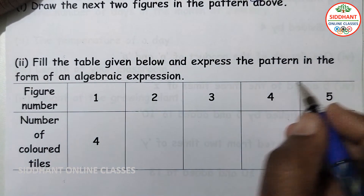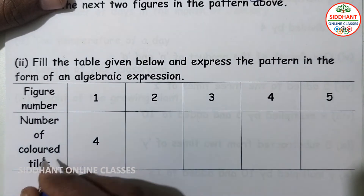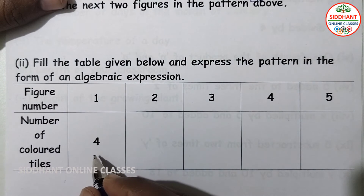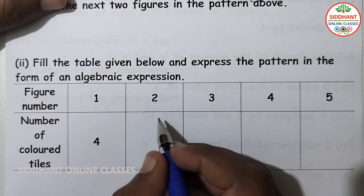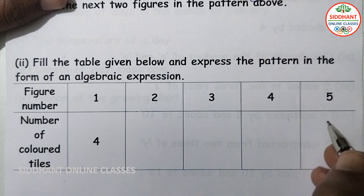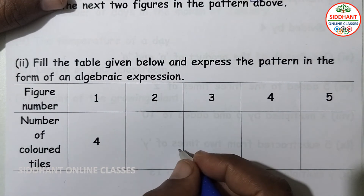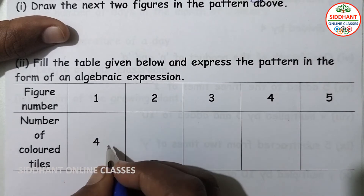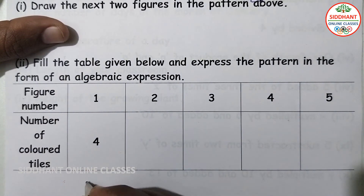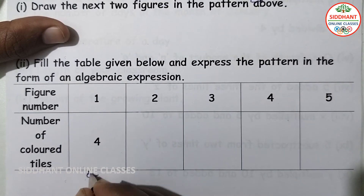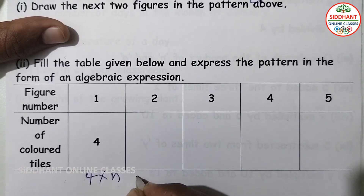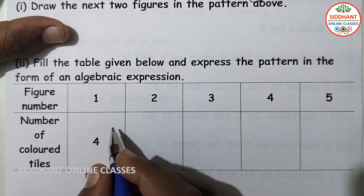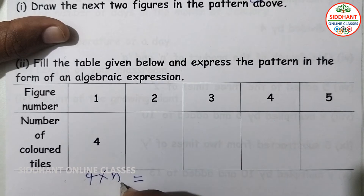Second part: fill the table and express the pattern in the form of an algebraic expression. In figure 1, the number of colored tiles is 4. The algebraic expression will be 4 into n, where n is the figure number. In figure 1, the number of colored tiles is 4 into 1, which equals 4.